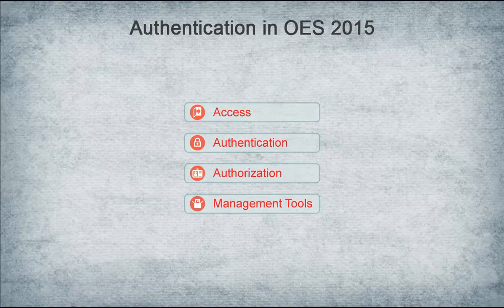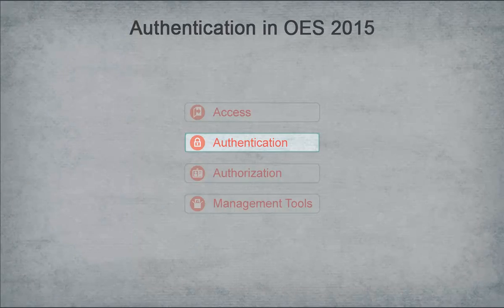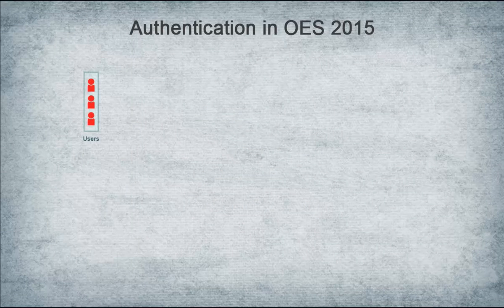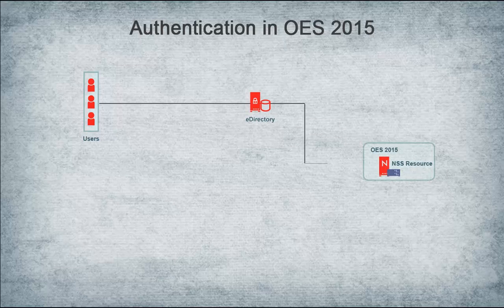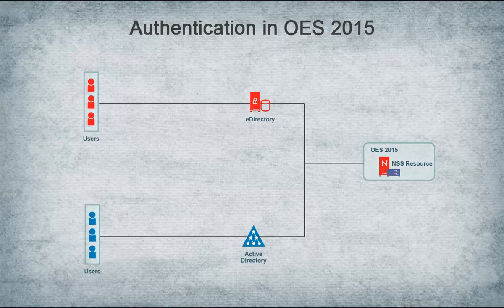Now let's take a look at how authentication is different in OES 2015. In previous versions of OES, all file access authentication was controlled using only eDirectory. Now, with OES 2015, both eDirectory and Active Directory identities are supported. OES does not duplicate identities across eDirectory and Active Directory. It allows users in an Active Directory environment to access NSS resources without existing in eDirectory. In OES 2015, both eDirectory and Active Directory users can co-exist and access the same volume concurrently.